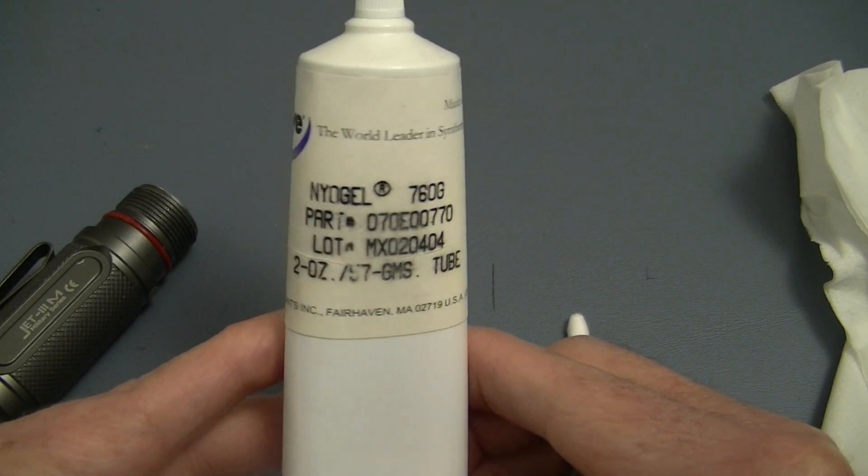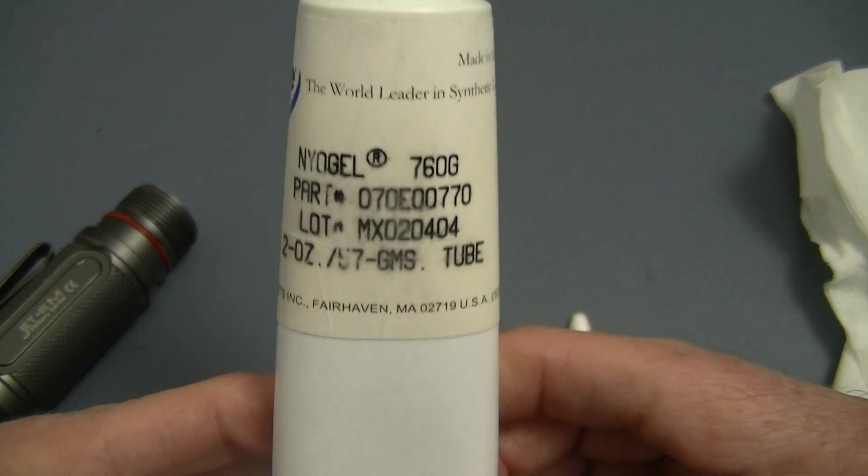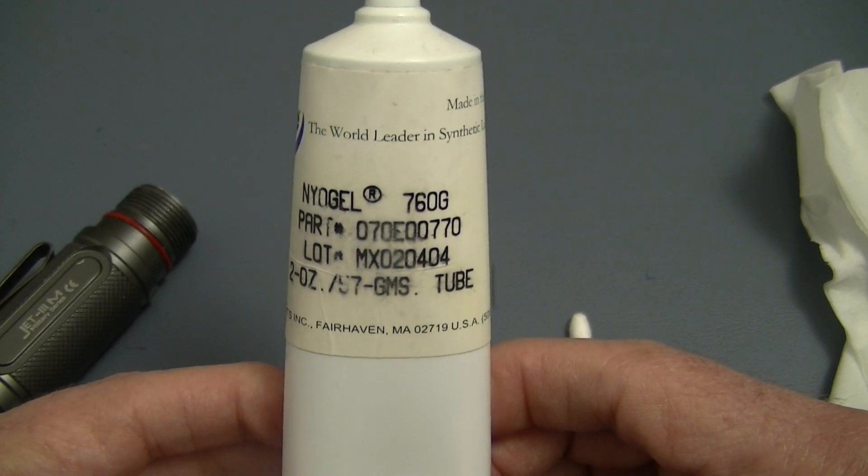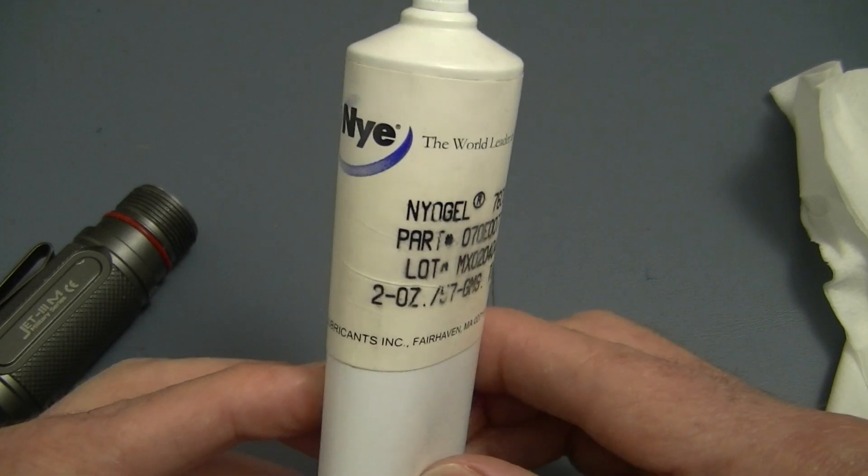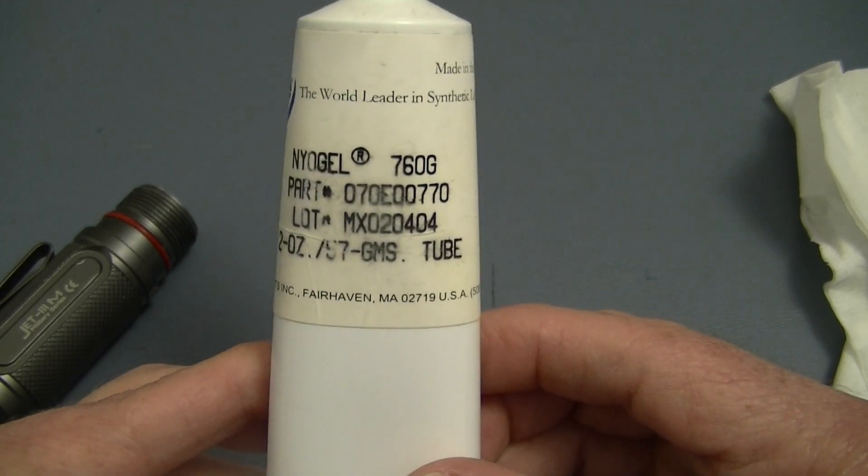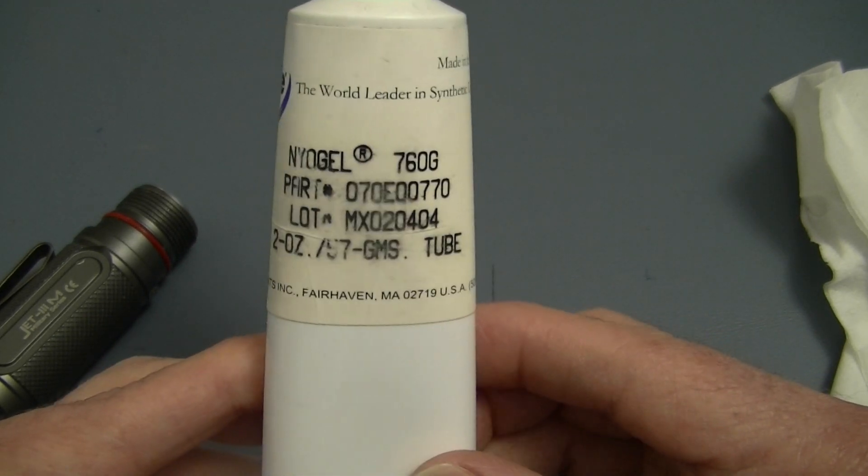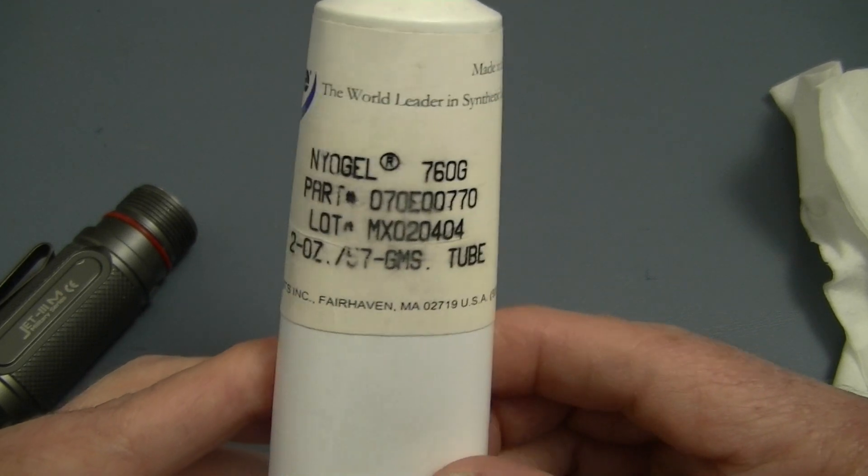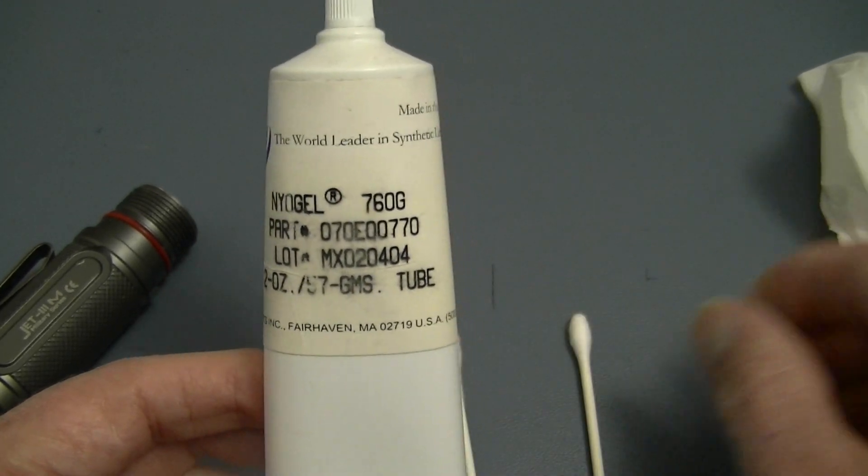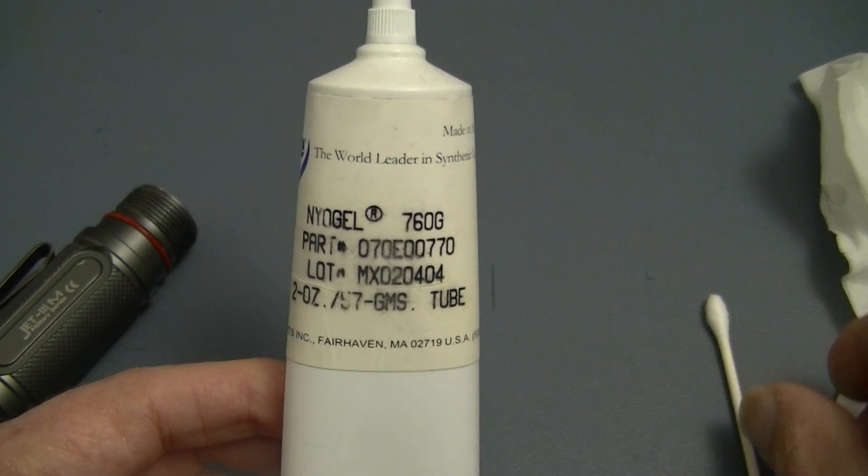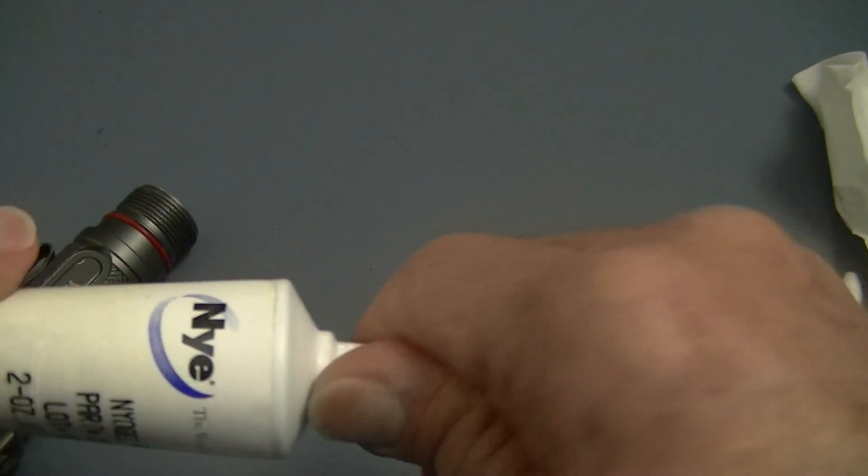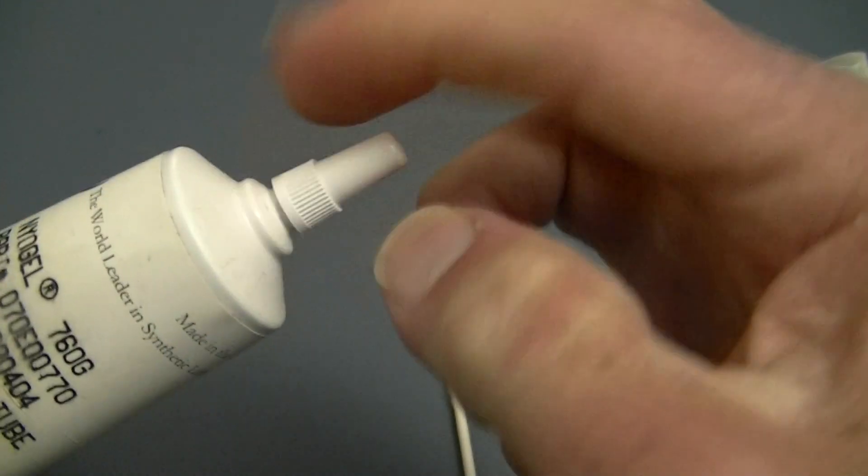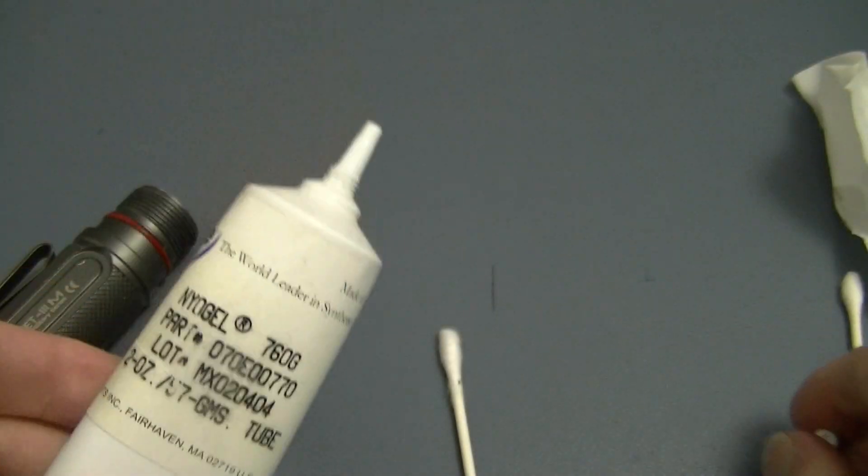But this is Nyogel, and it's one of the recommended types of cleaners. This is a silicone-based, nice clear liquid, and you can look this up. Of course, you can buy it in many different places online, and check out the links from lightsandgear.com. I believe they might sell it as well.